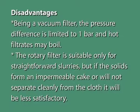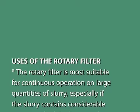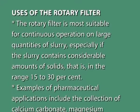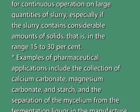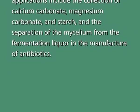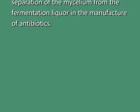Disadvantages of the rotatory filter include that the system is complex with many moving parts and is very expensive. The cake tends to crack due to air drawn through by the vacuum system so that washing and drying are not efficient. Being a vacuum filter, the pressure difference is limited to 1 bar and hot filtrates may boil. The rotatory filter is suitable only for straightforward slurries. The filter is most suitable for continuous operations on large quantities of slurry especially if the slurry contains considerable amounts of solids in the range of 15 to 30 percent. Pharmaceutical applications include collection of calcium carbonate, magnesium carbonate and starch, and the separation of mycelium from fermentation liquor in the manufacture of antibiotics.